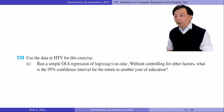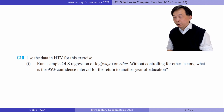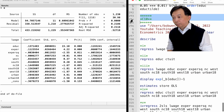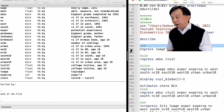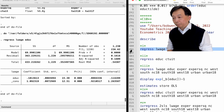In part 1 of exercise 10, we run a simple OLS regression of log wage on education. Without controlling for other factors, what is the 95% confidence interval for the return to another year of education? According to the simple regression, the 95% confidence interval is from 0.088 to 0.114.